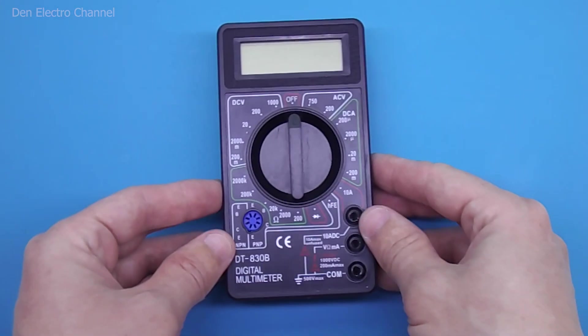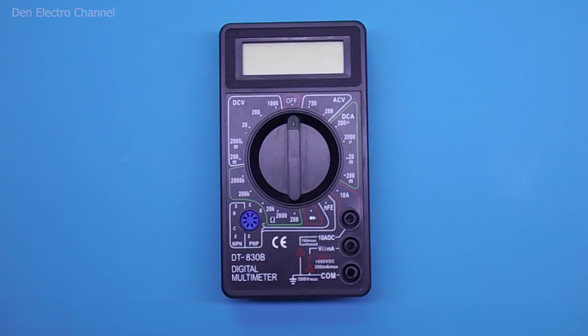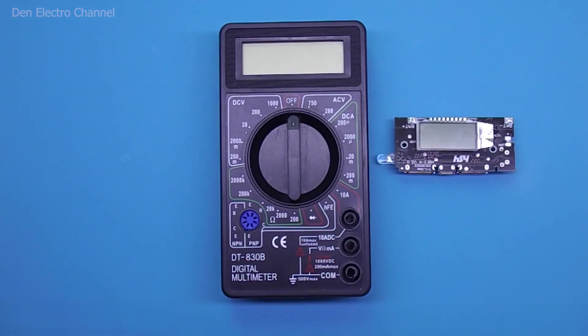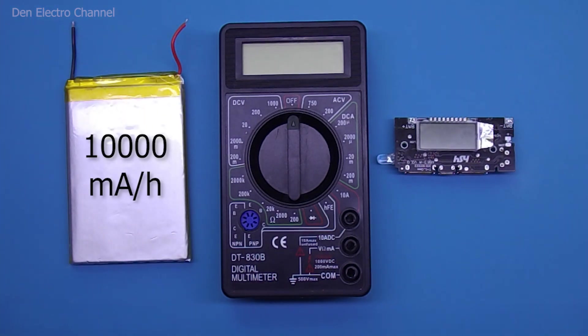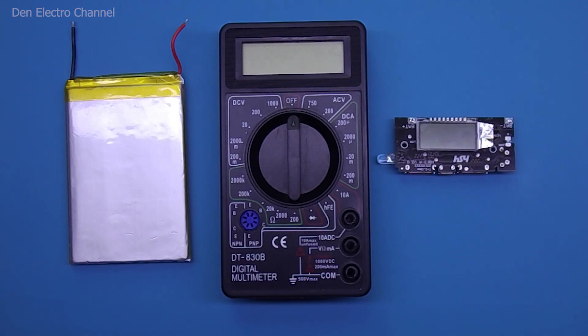To create it you will need a burnt out multimeter, a board for homemade power banks which I reviewed in the previous video, and a battery. I will use a lithium polymer battery with a capacity of 10,000 milliamp hours. This is enough to charge my phone three times.